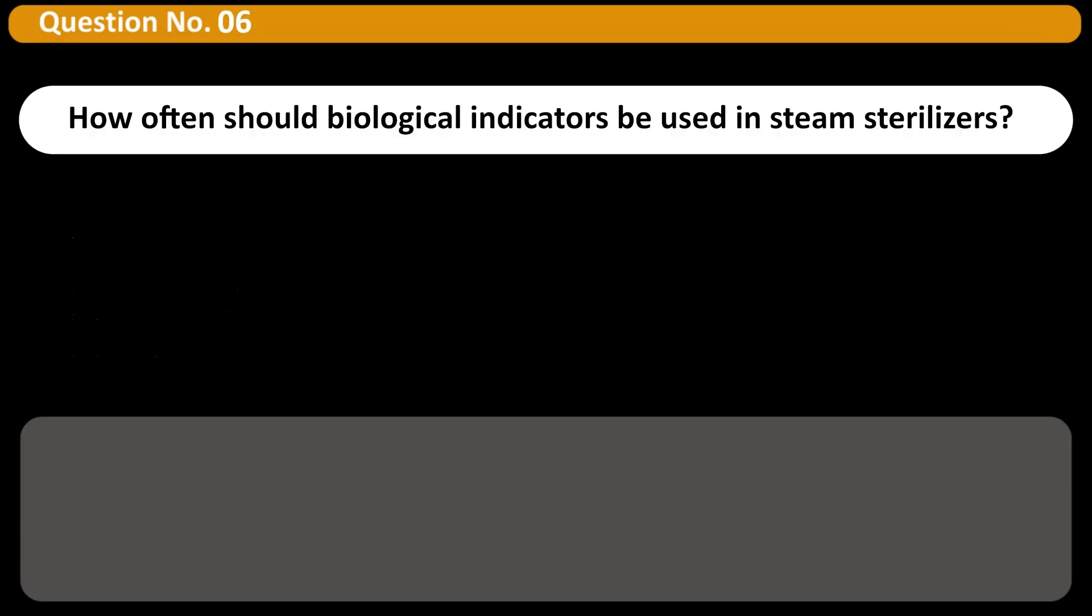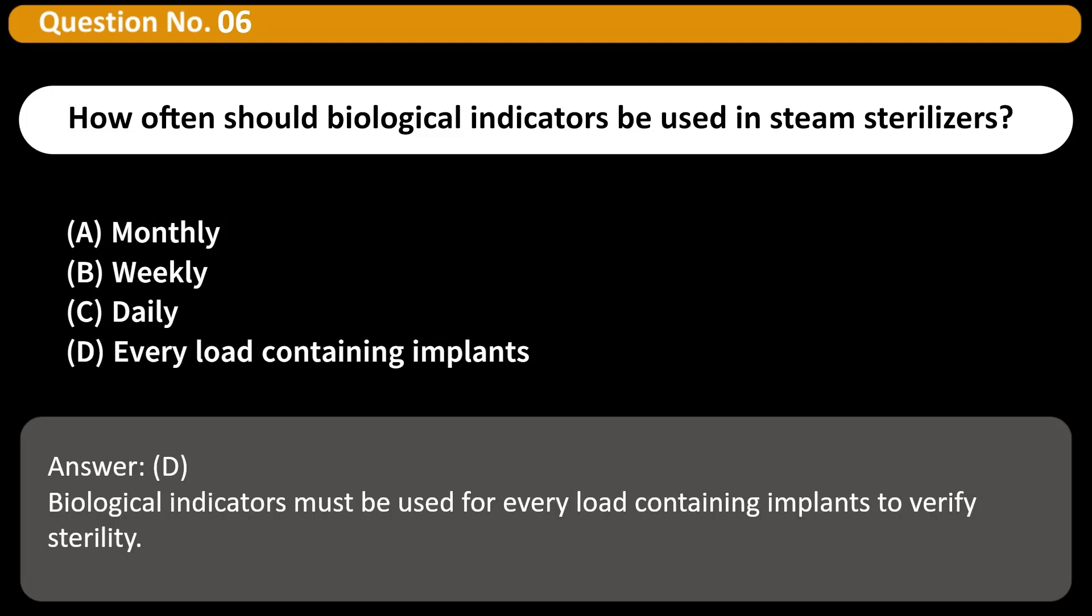How often should biological indicators be used in steam sterilizers? A. Monthly, B. Weekly, C. Daily, D. Every load containing implants. Answer D. Biological indicators must be used for every load containing implants to verify sterility.